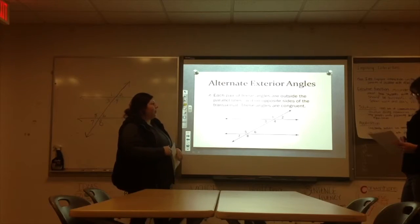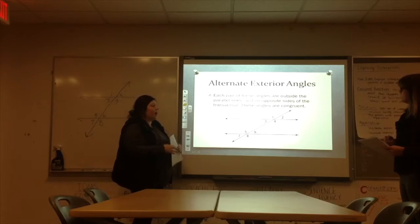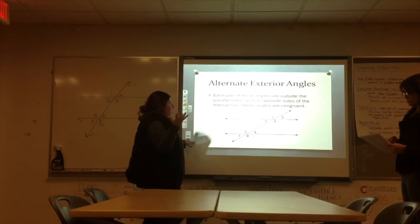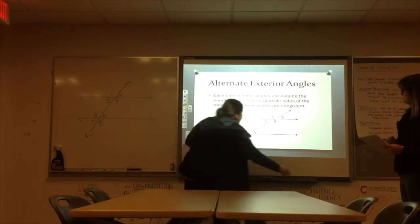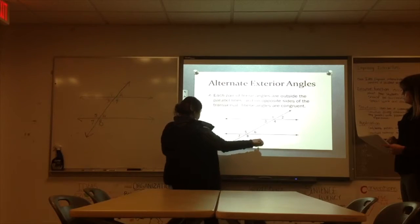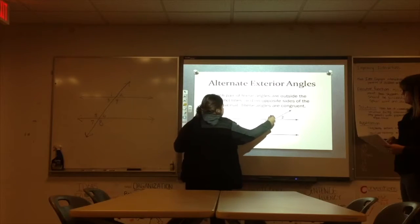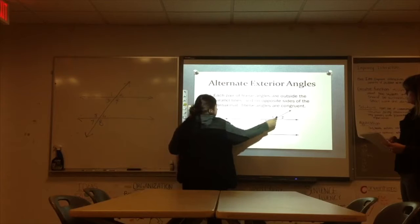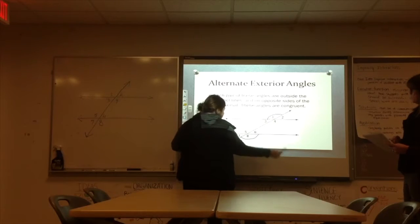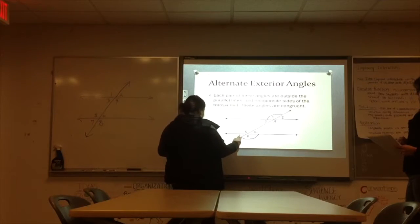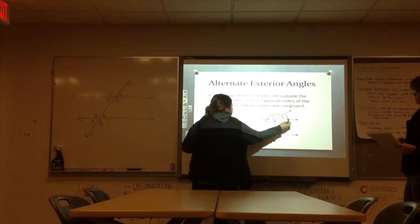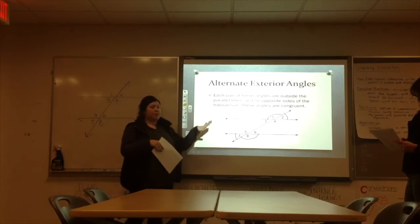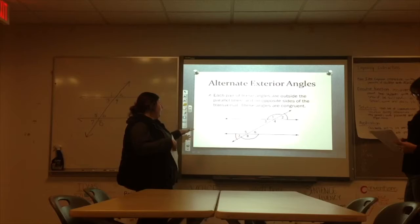And then we have our alternate exterior. Each pair of these angles are outside of the parallel lines. Opposite, so exterior, think outside of the parallel lines. And those are going to be your angles like 1 and 8. And then like 2 and 7. And when the angles have the same color, that means they are equal to each other. They have the same degree.